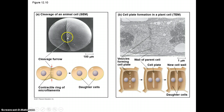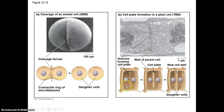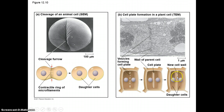Here is the cleavage furrow starting to pinch in until we have two separate daughter cells. On the plant cell side, you can see the cell plate forming in the center, starting in the middle and then pushing outward towards the poles, forming two separate daughter cells.